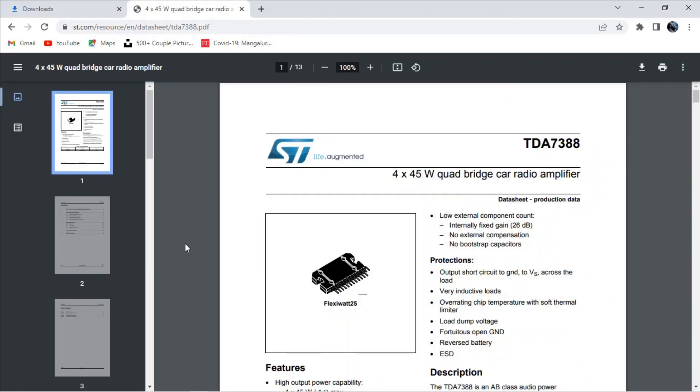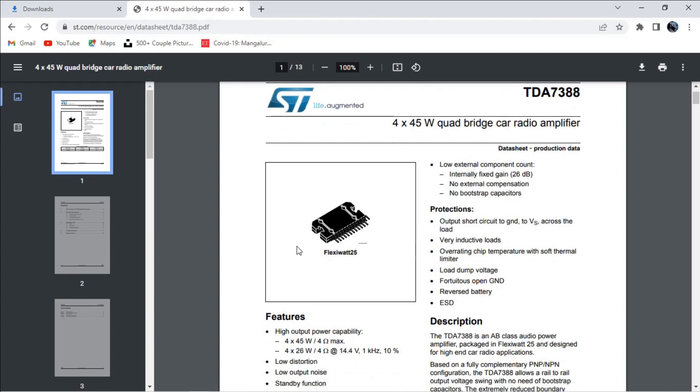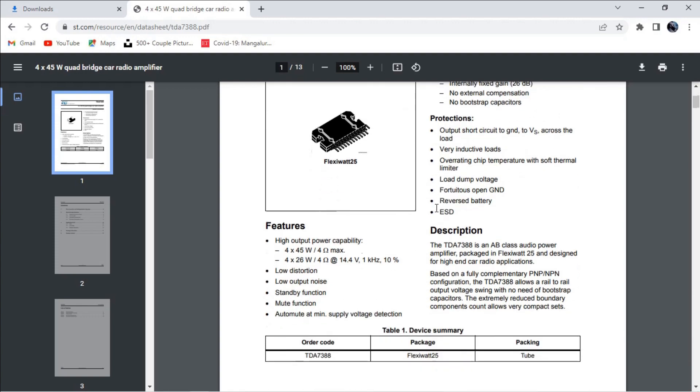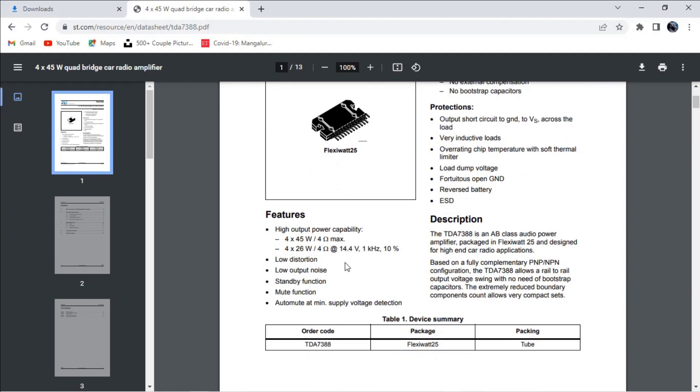The TDA7388 is a 4-channel 45W quad amplifier IC, and it works on 12V DC single supply. This IC can deliver 45W maximum, and its true RMS power is 26W per channel.